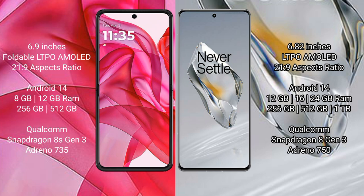The Motorola Edge 50 Ultra runs on Android 14, and the OnePlus 12 also runs on Android 14. The Motorola Edge 50 Ultra comes with 8GB or 12GB RAM and 256GB or 512GB internal storage, with a Qualcomm Snapdragon 8s Gen 3 processor and Adreno 735 GPU. The OnePlus 12 comes with 12GB, 16GB, or 24GB RAM and 256GB, 512GB, or 1TB internal storage, with a Snapdragon 8s Gen 3 processor and Adreno 750 GPU.